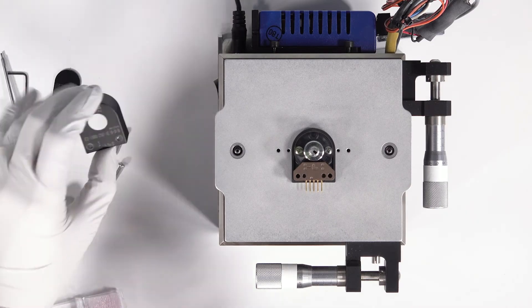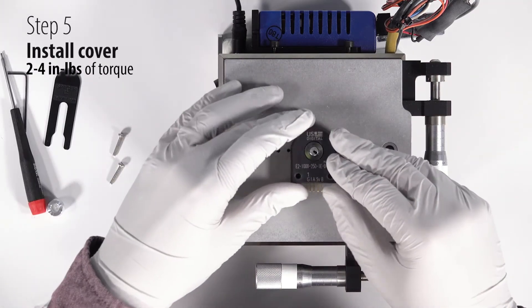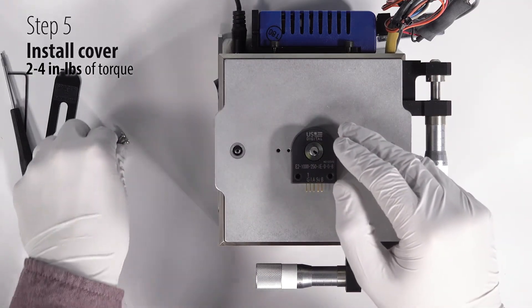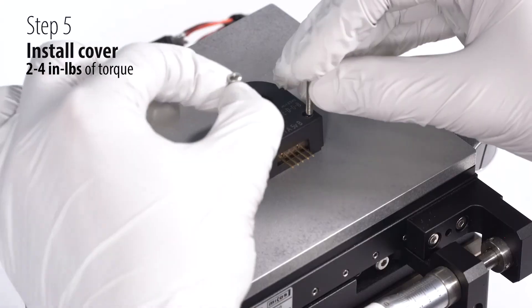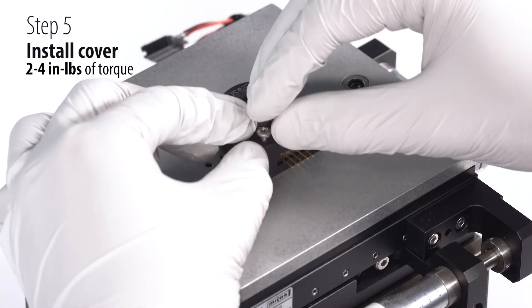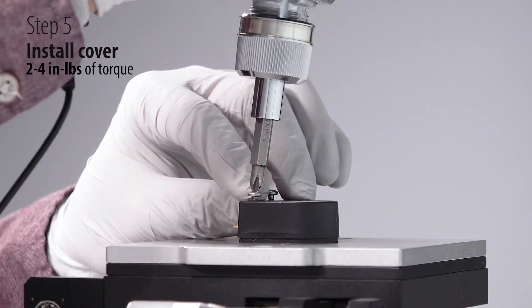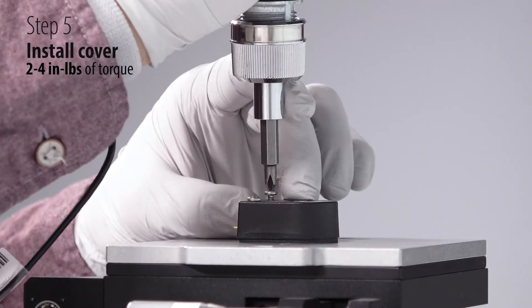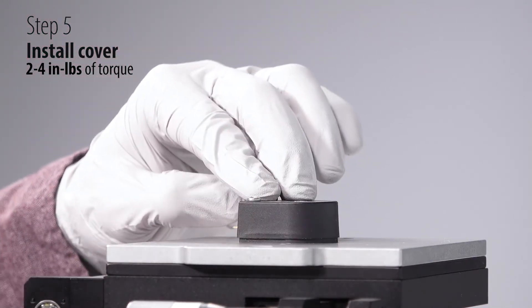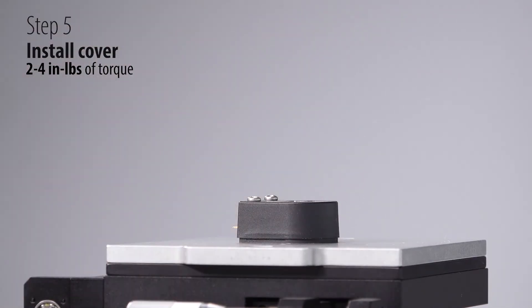The last step will be applying the cover using the two provided screws. These will be tightened down two to four inch pounds. And your E2 encoder is now ready for use.